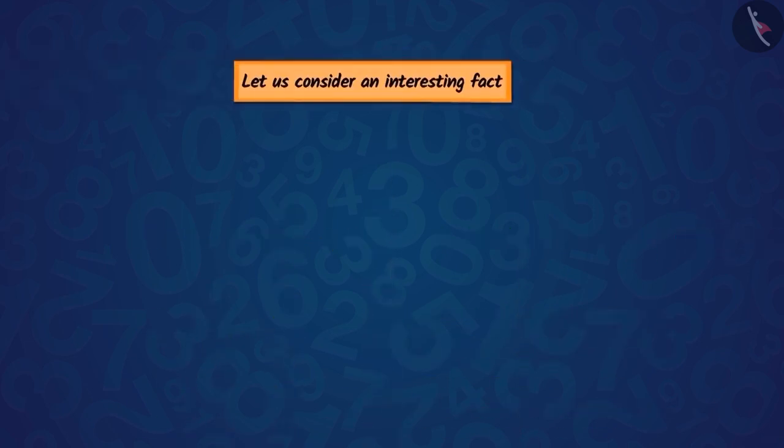Let us consider an interesting fact. Let's divide the number 64 by 2. We get 32 as the answer. Can you guess the square root of 64? Absolutely right! It is 8. Is 8 divisible by 2? Yes, if 8 is divided by 2, we get 4 as the answer.